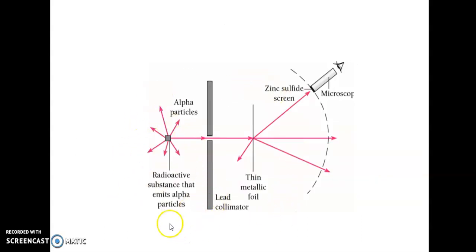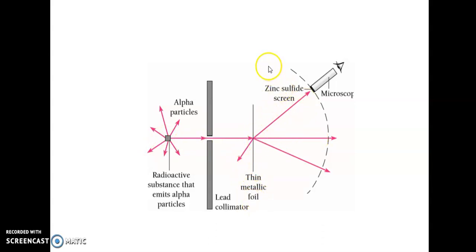The alpha particles are doubly ionized helium atoms, produced from radioactive substances. They are passed through a collimator, then allowed to hit a thin gold foil, and the scattered alpha particles are observed with the help of a microscope. If J.J. Thomson's model was correct, all the alpha particles should pass through the gold foil without any deflection — a maximum of about 1 degree of deflection would be expected.